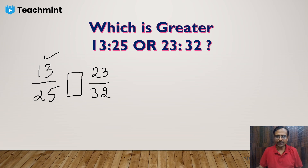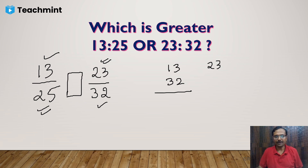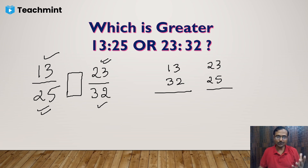Then I'll take the numerator of the second ratio, which is 23, and multiply it with the denominator of the first ratio, which is 25. So I need to find these two products. For finding these products, you can use the vertical and crosswise method — a trick useful for any type of multiplication.